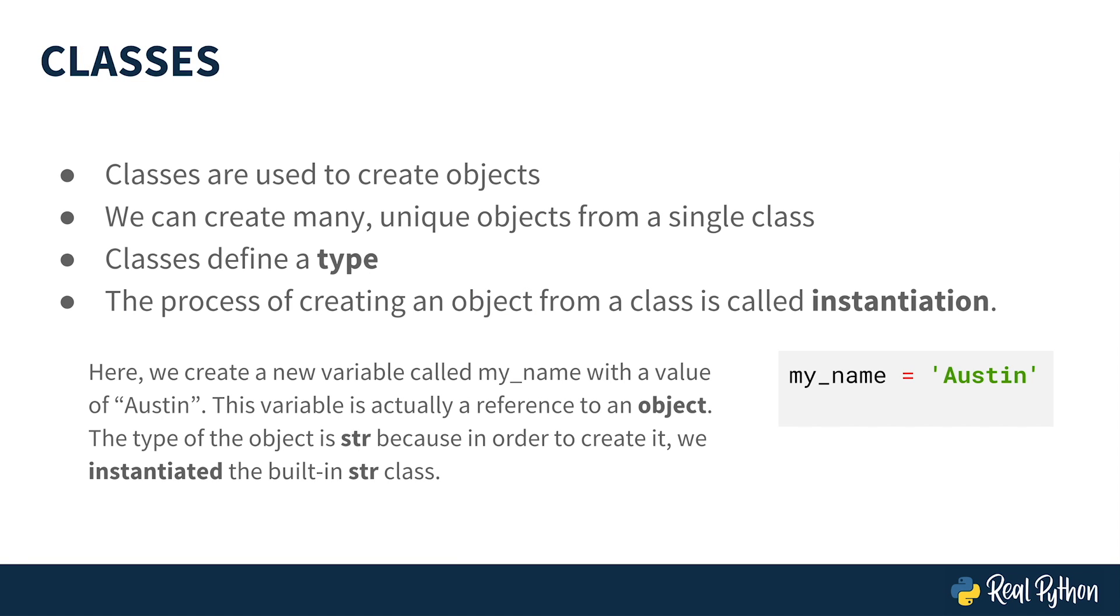To create our own objects, we use Python classes. Classes are used to create objects, practically as many unique objects as we want. They also define a type.